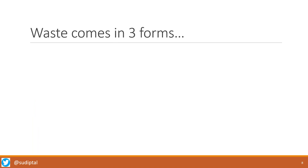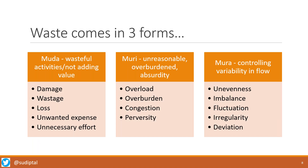Waste comes in three forms — this is very classic lean literature. Muda, Muri, and Mura. Muda is essentially identifying activities which are not adding value or spending too much effort for the value you're going to get out of it. Muri is where you're overburdened — you're trying to do too many things. Because you're trying to do too many things, you're getting overburdened, overstressed, not able to spend adequate time, and quality is going down.